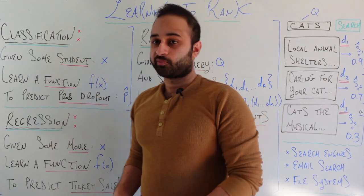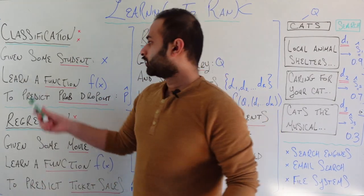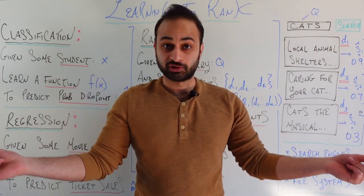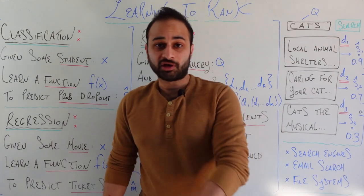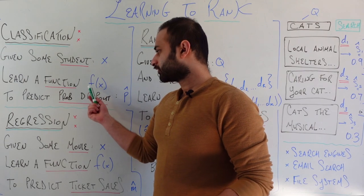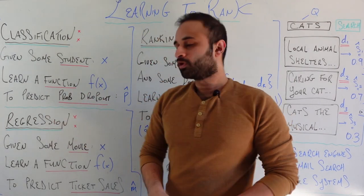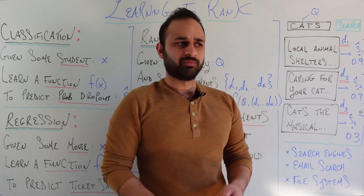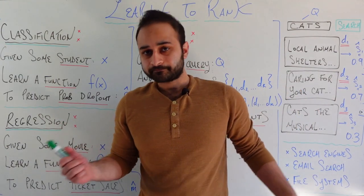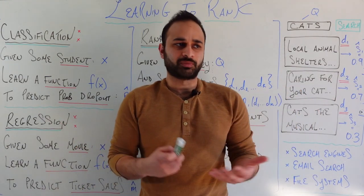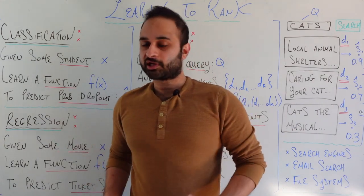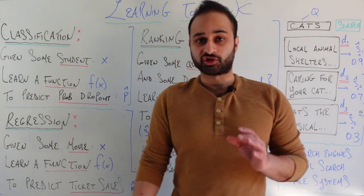For classification, here's an example we've used a lot on this channel: given some student X — think of X as a feature vector about a high school student, like how long they've been in high school, their GPA, grades, and so on — we want to learn a function f(X) that predicts the probability that student will drop out. We use this predicted probability, between zero and one, to make some decision, like sending resources to help them. That is a typical classification problem.